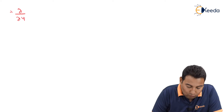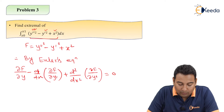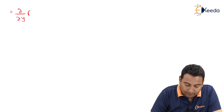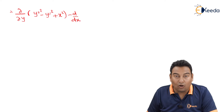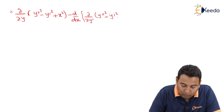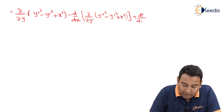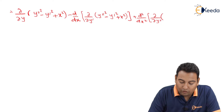Let's put f into this equation. We compute ∂/∂y of f, where f is y″² minus y′² plus x², minus d/dx of ∂/∂y′ of (y″² minus y′² plus x²), plus d²/dx² of ∂/∂y″ of f, equals zero.